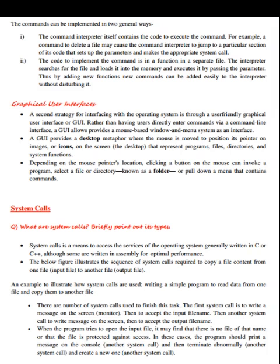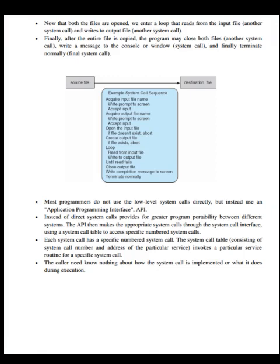There are a number of system calls used to finish this task. The first system call writes a message to the screen to accept the input file name. When the program tries to open the input file, it may find there is no such file or that the file is protected. In these cases, the program prints a message on the console (another system call), terminates abnormally (another system call), and creates a new one (another system call). Once both files are opened, a loop reads from the input file (a system call) and writes to the output file (another system call). Finally, after the file is copied, the program closes both files (another system call), writes a message to the console (another system call), and terminates normally (a final system call).